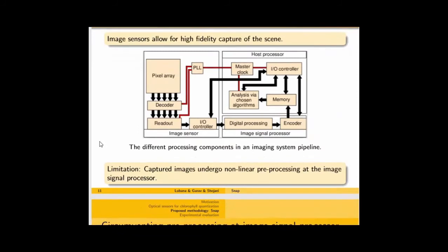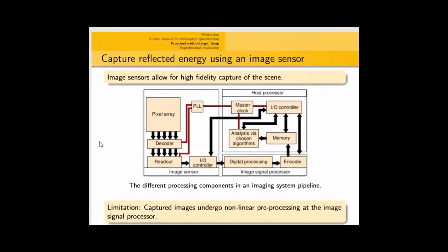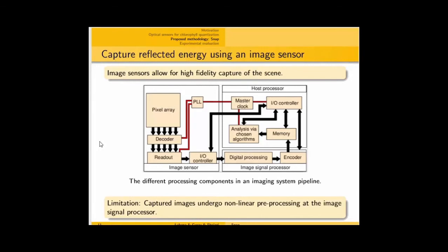SNAP uses cameras for capturing the spectral information. These involve an image sensor for the cameras, will involve an image sensor for high-fidelity captures of the scene. And this allows for good pixel manipulation, because the host processor can be very easily programmed.